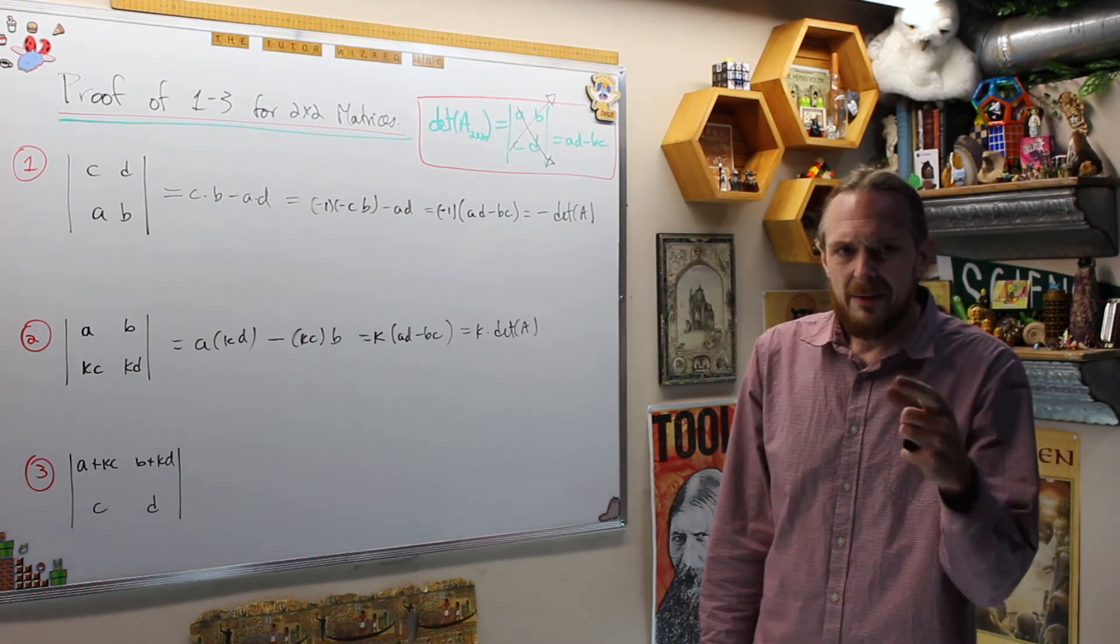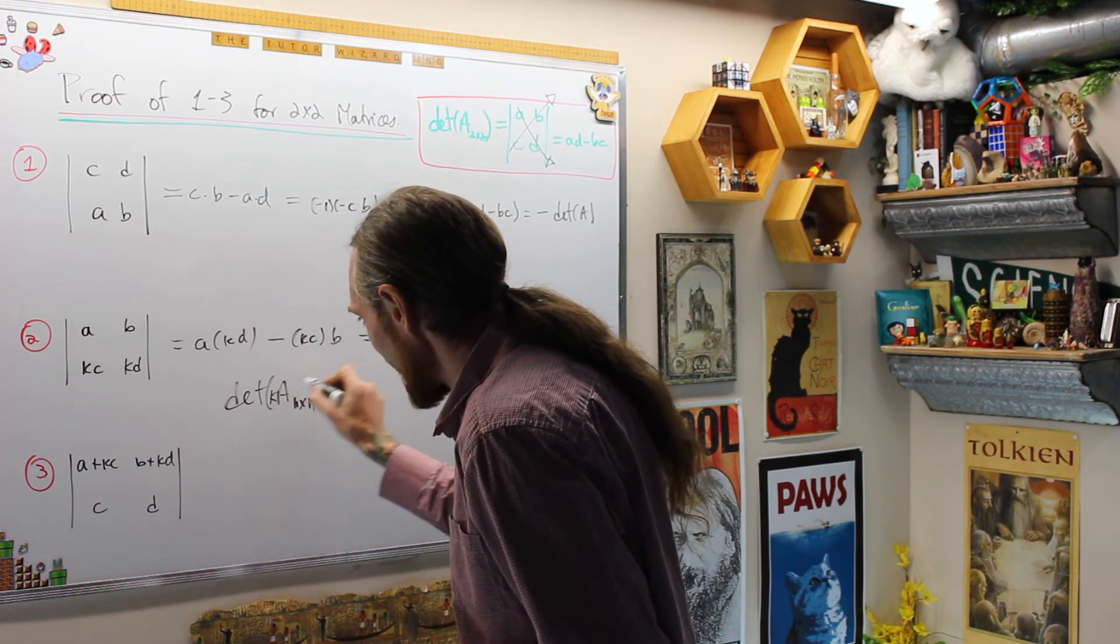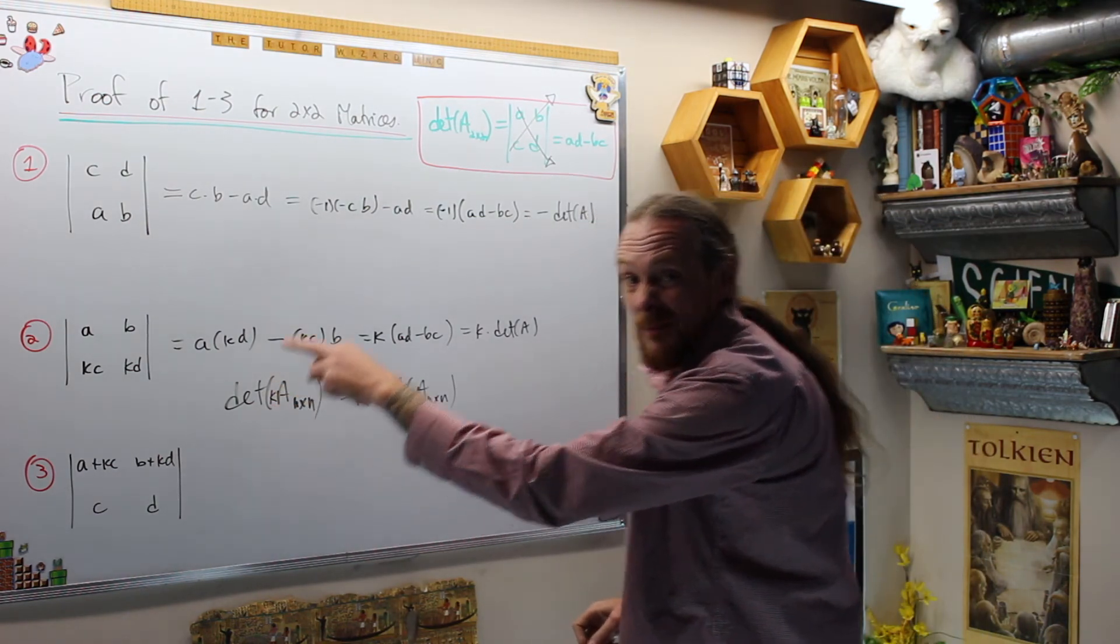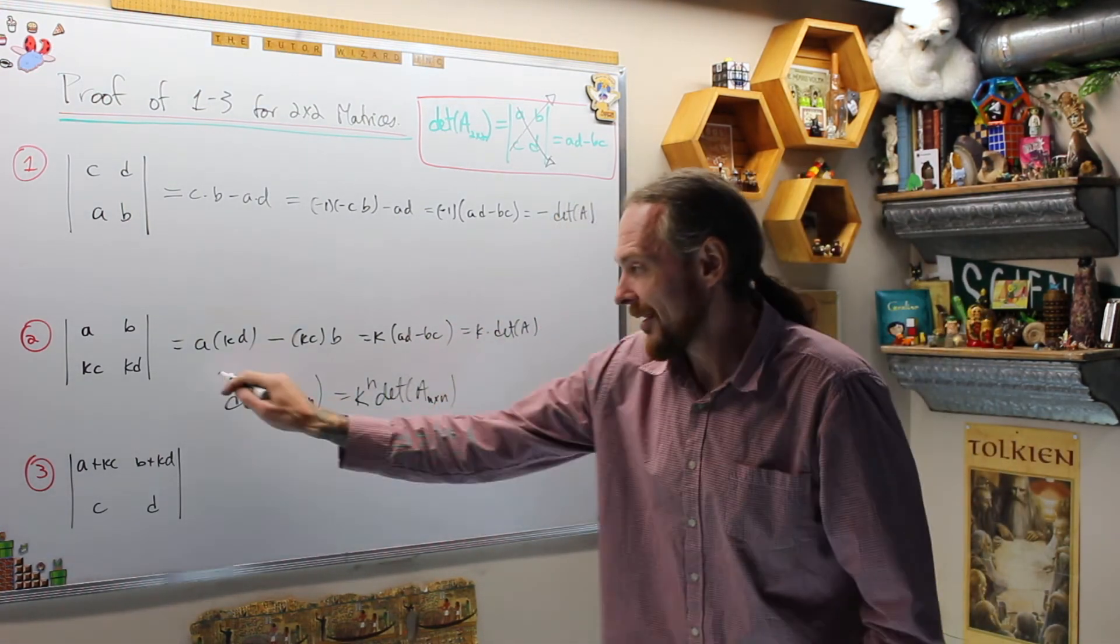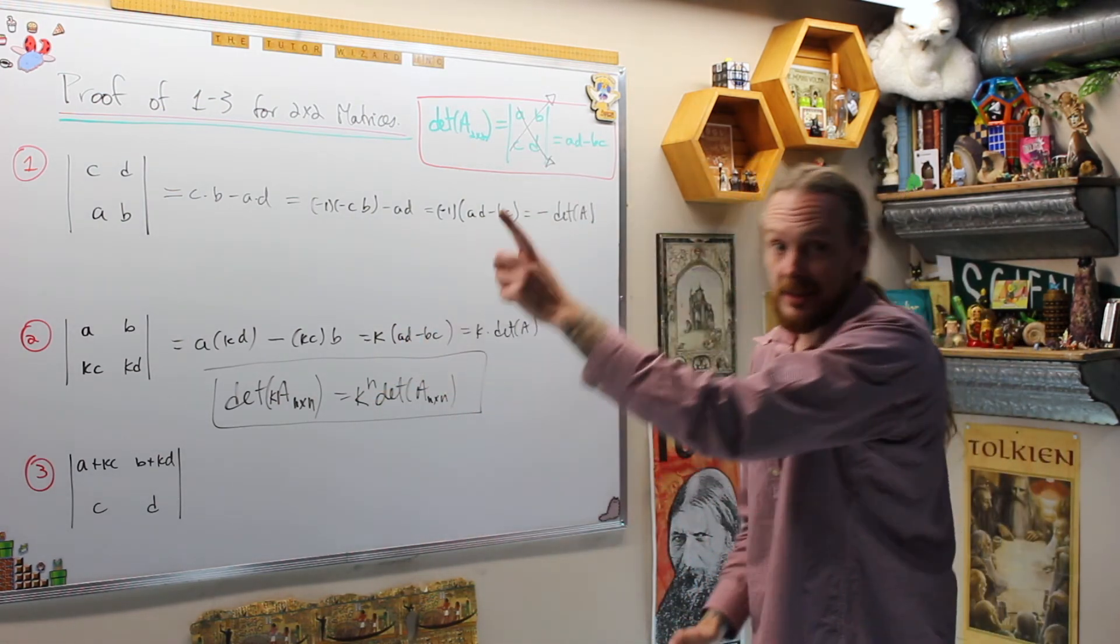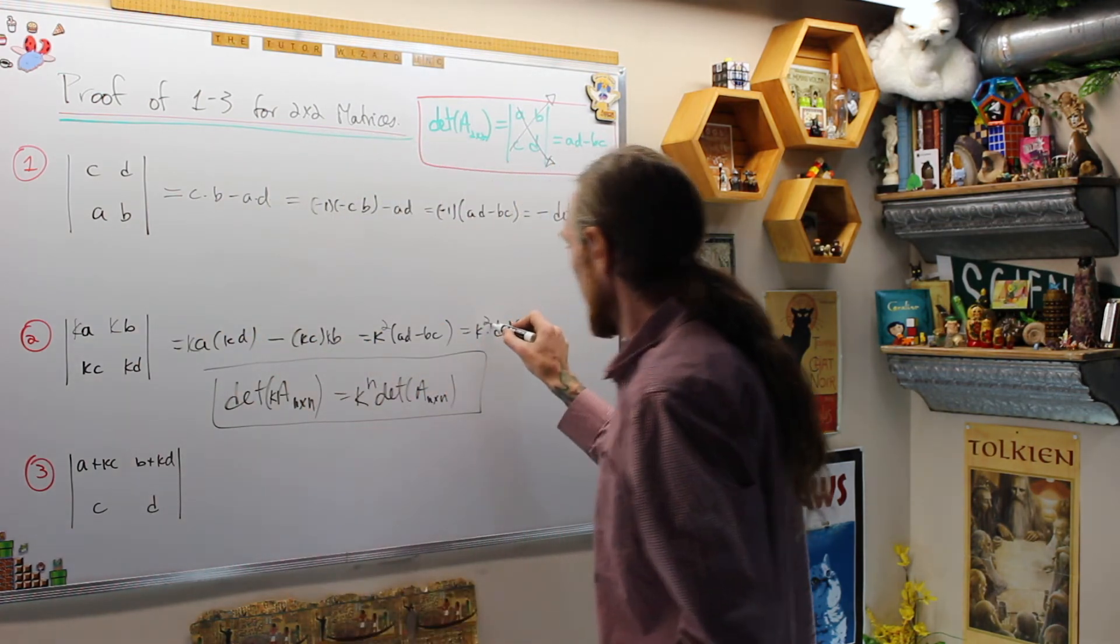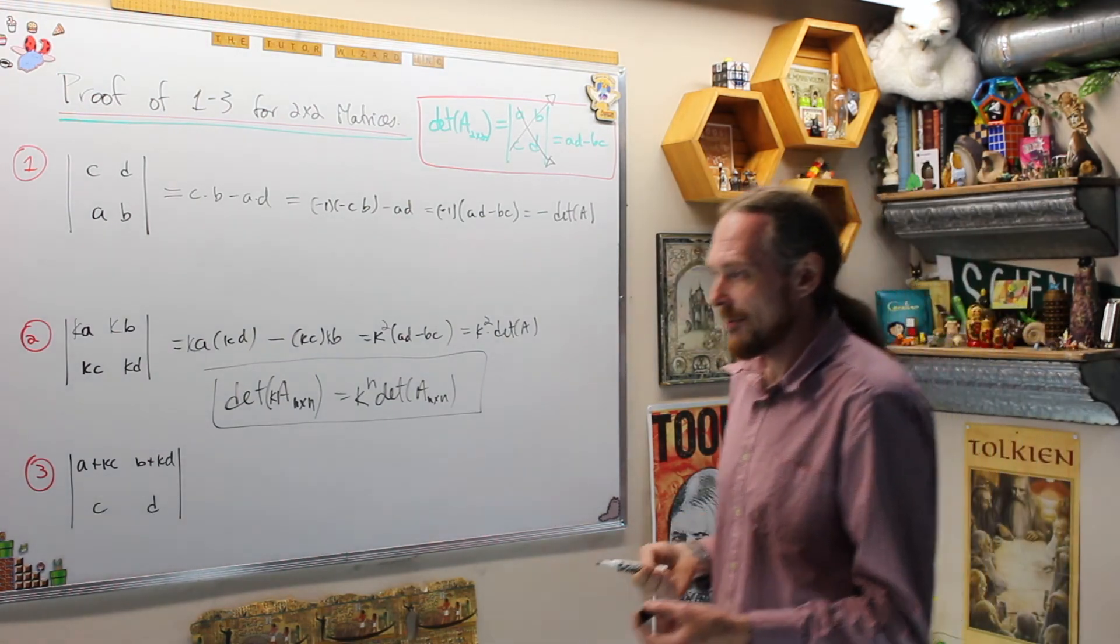So that is K times the determinant of A. Coincidentally, a corollary to that is where they'll try and trick you. The determinant of an N by N matrix multiplied by K is not K the determinant of A because scalar multiplication goes into every row. So I have to pull out K out of each of the N rows. So the correct formula is the determinant of K times an N by N matrix is K to the N times the determinant of the matrix because I have to pull the K out of every row.